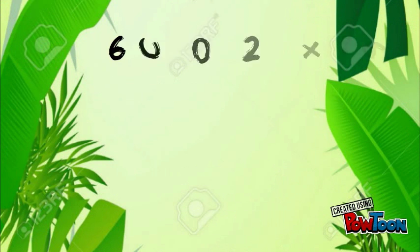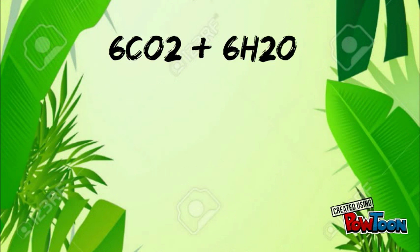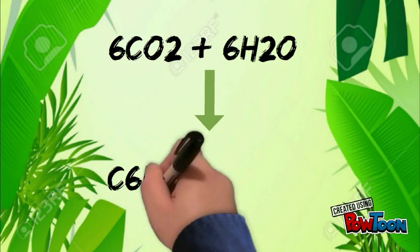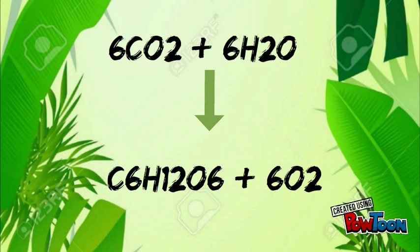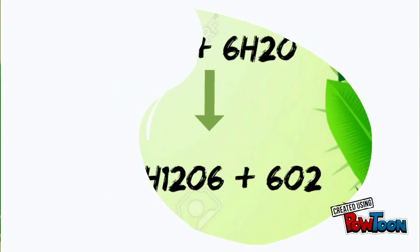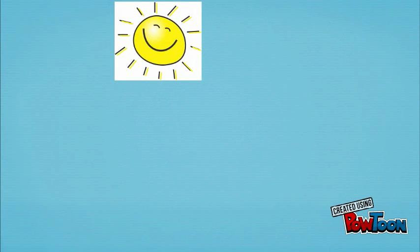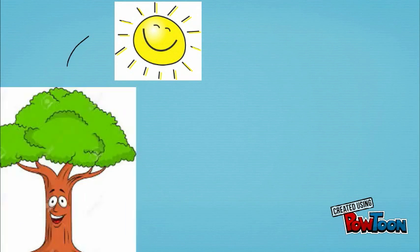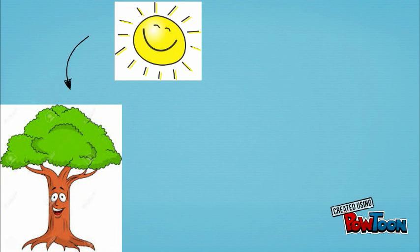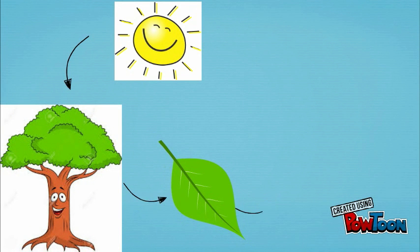Photosynthesis is the reaction between carbon dioxide and water which produces glucose as the main product and oxygen as the byproduct. Energy for the reaction is taken from the sunlight. Green leaves can absorb the energy of different wavelengths of sunlight.